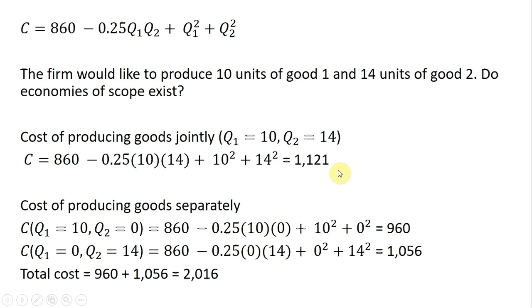Let's see if it would be cheaper to produce these goods in perhaps two separate facilities. We're going to first evaluate this cost function where Q subscript 1 is 10 and Q subscript 2 is 0. So we're just going to produce nothing but good 1 in one facility. And doing that, we see the cost is $960.